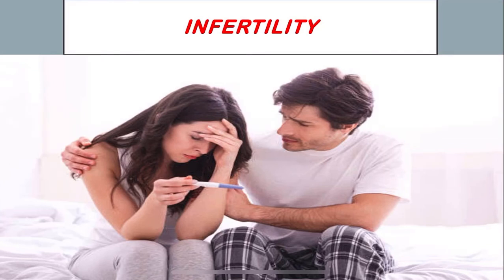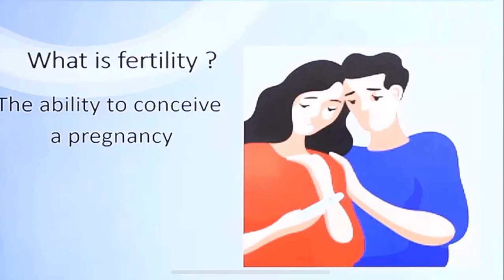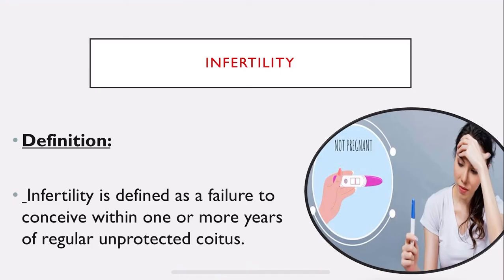In this video, we are going to study about a gynecology topic called infertility. Before understanding infertility, we need to know what is fertility. Fertility is the ability to conceive a pregnancy, whereas infertility is defined as failure to conceive when the woman fails to conceive a pregnancy within one or more years of regular unprotected coitus. If it is within 5 or 6 months, it is not considered infertility.